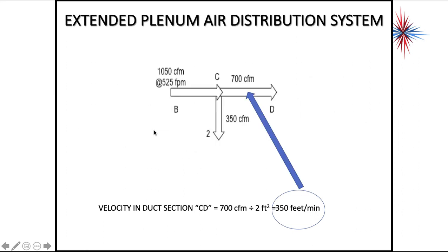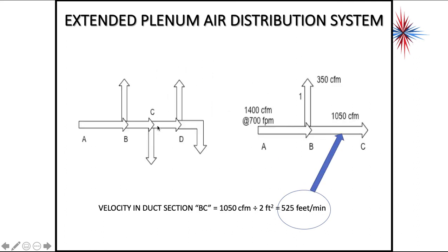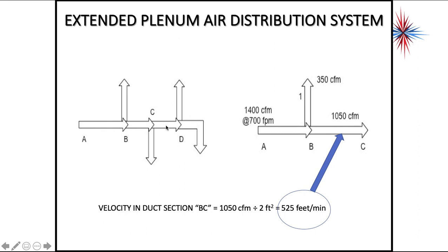Then we go to my next one, which is after point C to D, so if we look at my whole run here, we're talking this area right there, between C and D. I have my 1,050, I'm losing 350, so what I have remaining is 700 CFM. Divide that by my 2 square feet, my velocity here, between C and D, is 350 feet per minute.